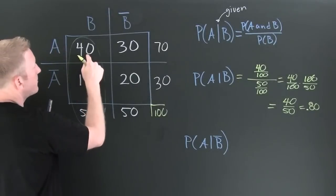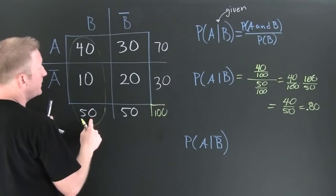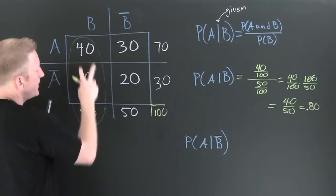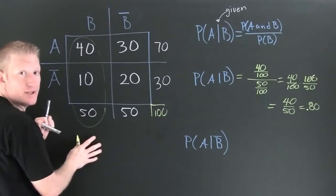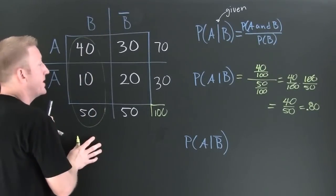So what are we looking for? We're looking for the probability of A given B. So here's 40 out of 50. Because the B has already occurred, we can write it that way.